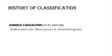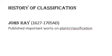Next is Andrea Cisalpino, whose time period was from 1519 to 1603. What he did was divide plants into 15 groups and he called them genera.